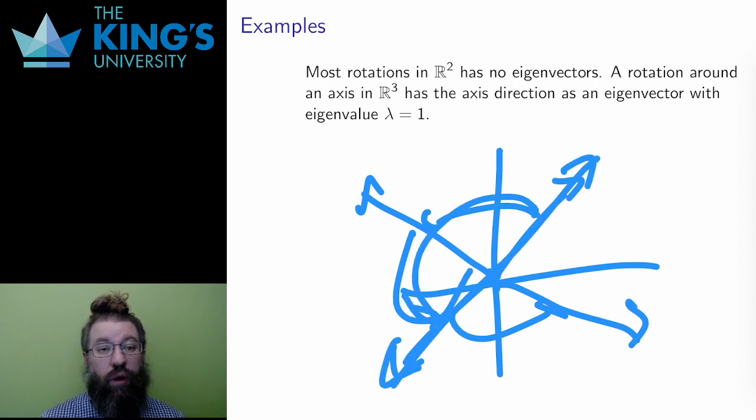This rotation flips all directions, so it means that everything is an eigenvector, and the eigenvalue for all of them is negative 1, because negative 1 is representing flipping the direction.